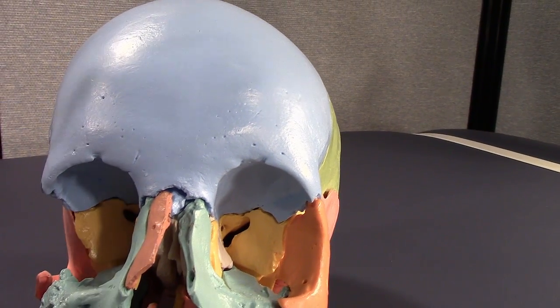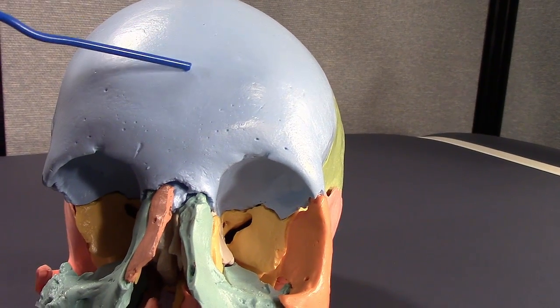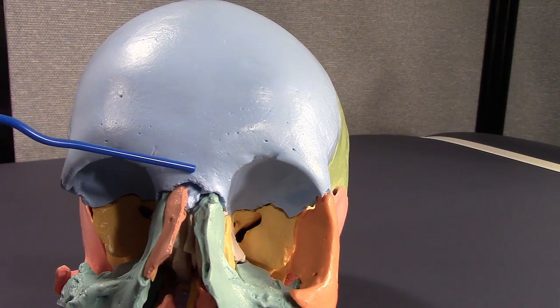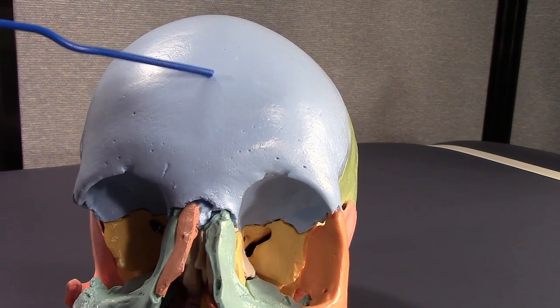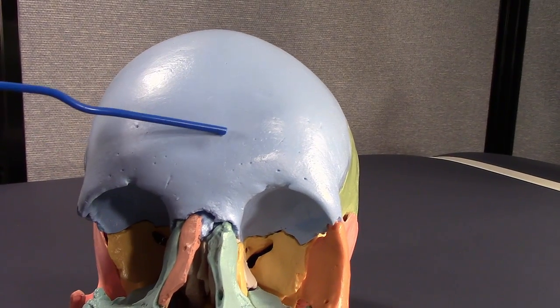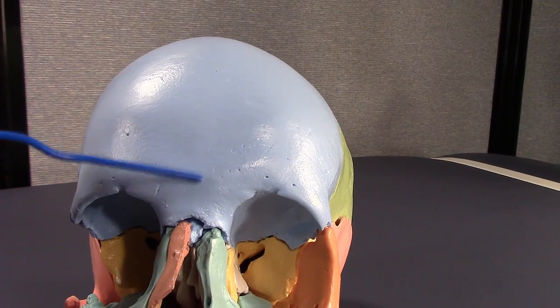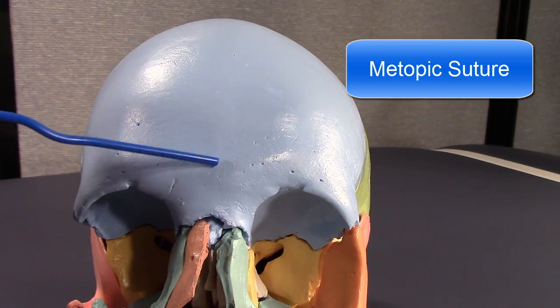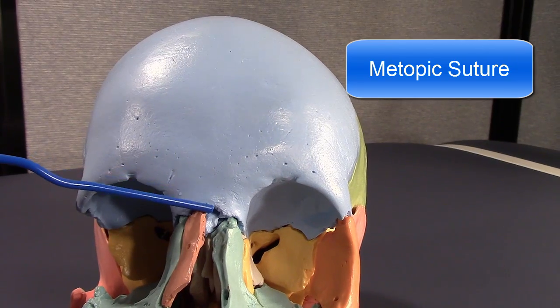The only other thing I want to say is in maybe eight percent of the population or so, there is a suture running right down the skull. It may be complete or may be partial. We don't see it here in the skull. But that's the frontal suture or the metopic suture is the more common term. So it might be a board question.